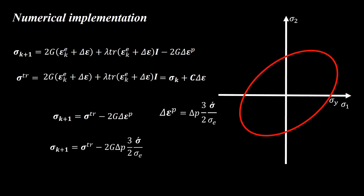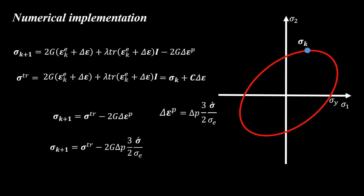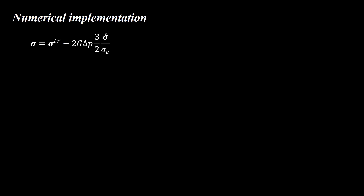Let's examine the role of the trial stress and plastic correction in three situations. First, if the material is elastic at the beginning of the increment and the trial stress is also elastic, we conclude that the plastic strain increment is zero and the stress at the end of the increment equals the trial stress. In a second situation, if the material is elastic at the beginning but the trial stress lies outside the yield surface, the final stress is brought back onto the yield surface by the plastic corrector. To obtain delta p, we need to solve a vector equation containing six component equations.